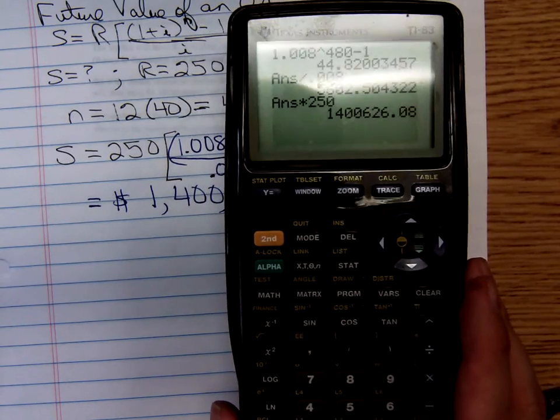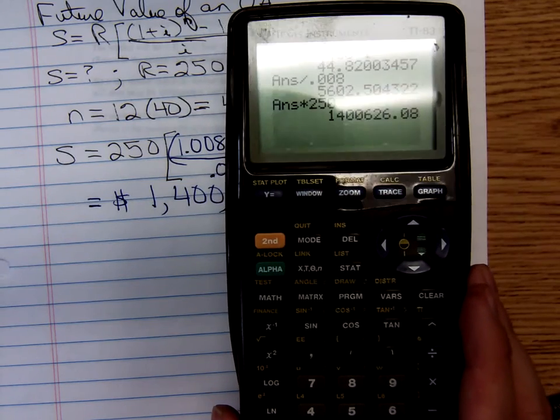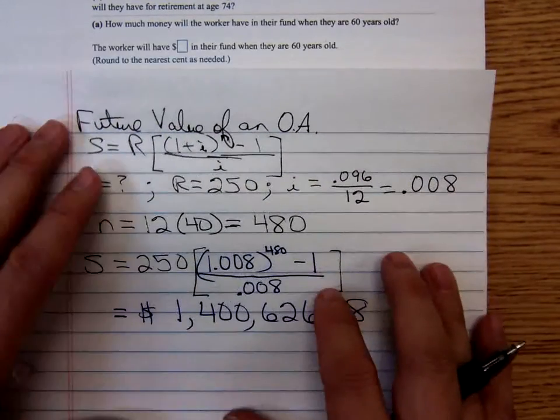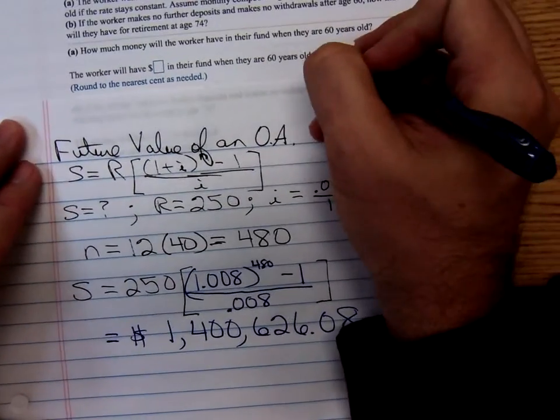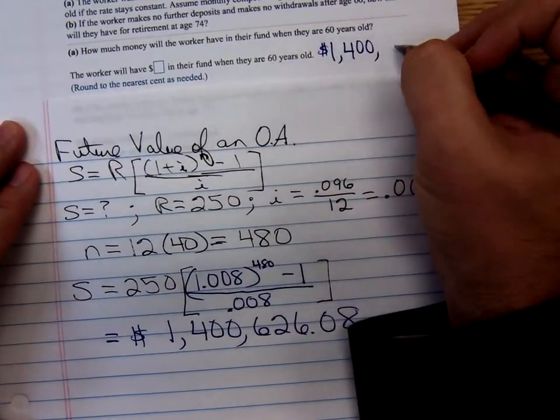This person's account by the time they're 60, they're going to have $1,400,626.08 in that account.